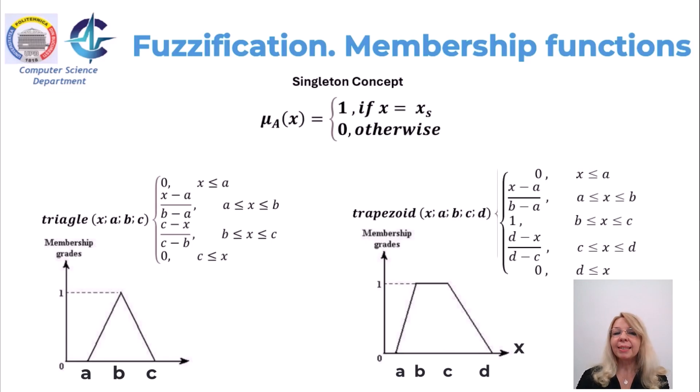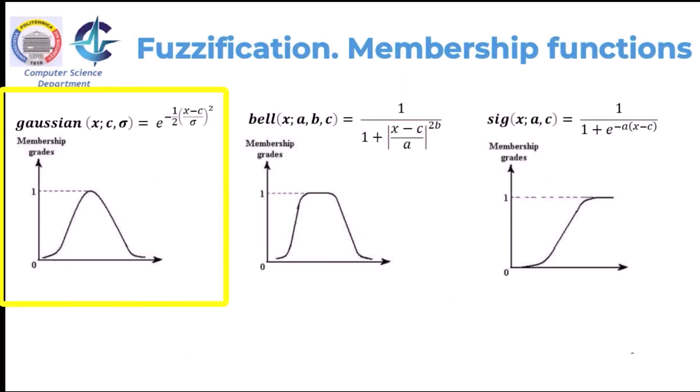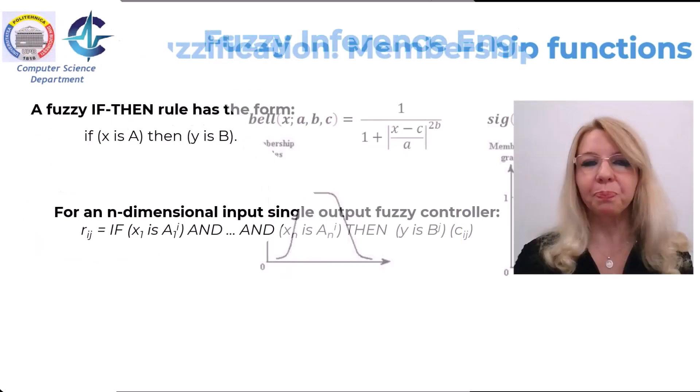Several classes of membership functions are given below. You can observe the description for a triangular membership function specified by three parameters, trapezoidal membership functions specified by four parameters ABCD, a Gaussian membership function which is specified by two parameters, a generalized Bell membership function, and the sigmoidal membership function that is specified by two parameters.